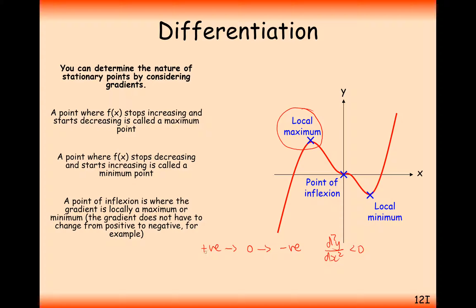So d²y/dx² is going to be less than zero. The reason is, if you look at how the gradient is changing, it goes from a positive number to a zero number to a negative number. You can see what's happening: the value of the gradient is getting smaller each time. The rate at which the gradient is changing — that is effectively what the second derivative is — it's less than zero in this case.